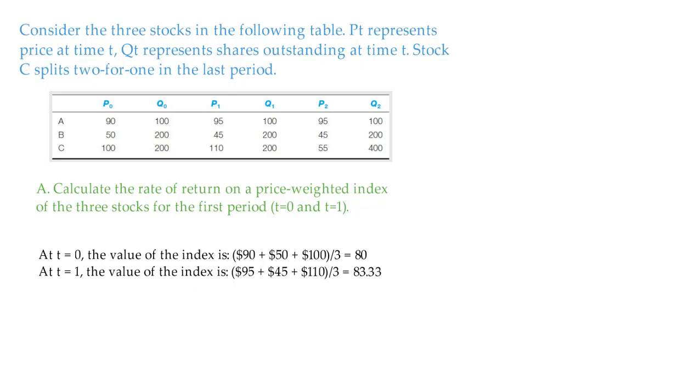At time 0, the value of the index is, you just add these three prices up and divide it by 3. You get 80. At time T equals 1, the value of the index is, you add three new prices together, 95, 45, 110, divided by 3. And you get 83.33.